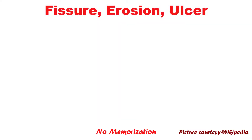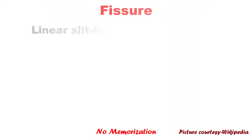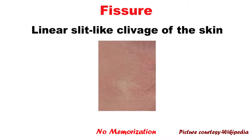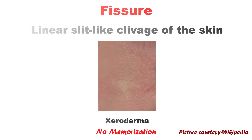Now we will discuss fissure, erosion, and ulcer all together because those are pretty similar. So fissure is a linear slit-like cleavage of the skin, as you can see in this picture. This picture particularly shows generalized skin fissure caused by xeroderma. We will talk shortly about xeroderma.